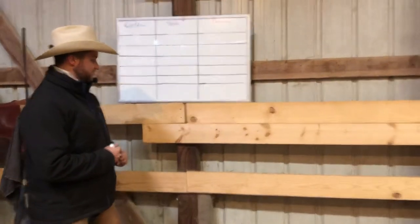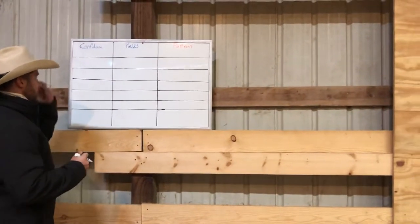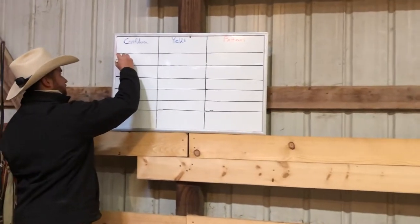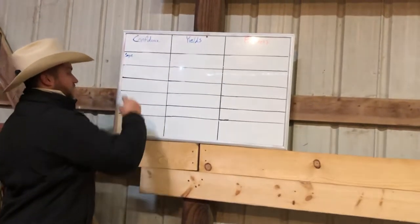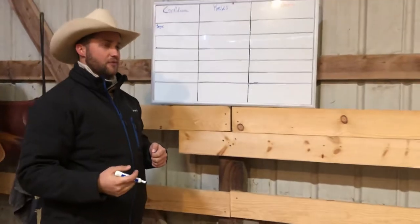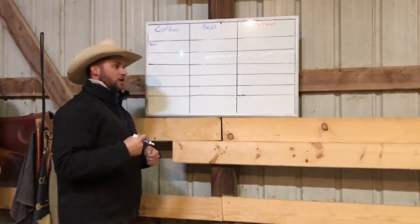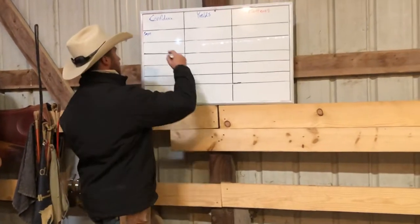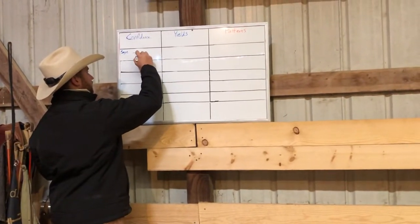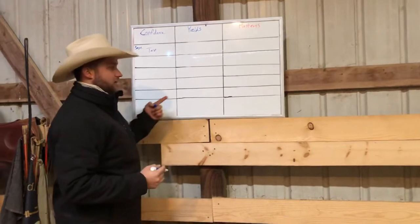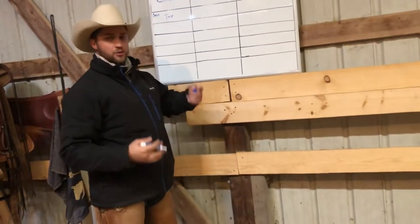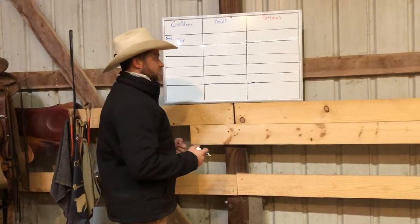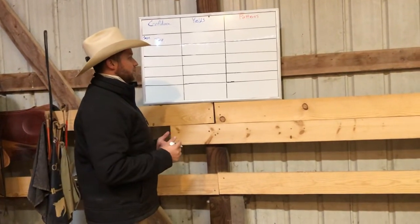So let's go through this with my horse Sage as an example. We'd have Sage's name and then figure out what we're working on confidence-wise. This week maybe I'm working on getting her to cross the tarp — we've got the tarp up here. I would suggest you pick between one and three things for each subject. Don't go more than three — that'd be too many things to really do a good job of focusing on.